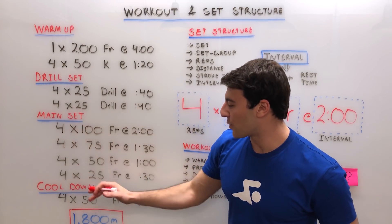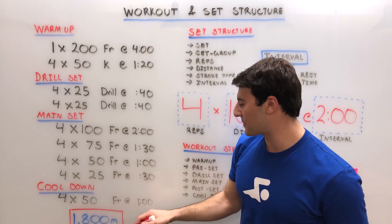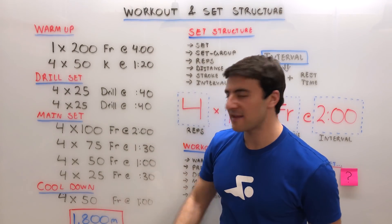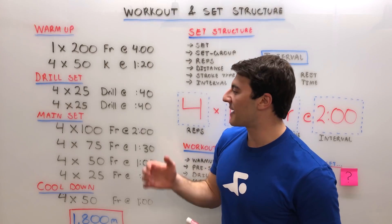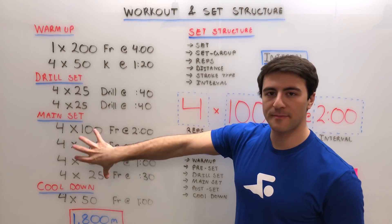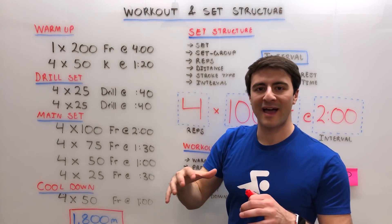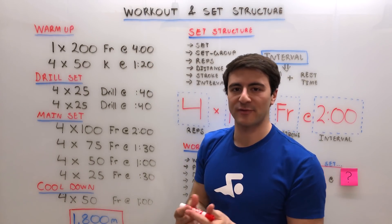Now after the main set, we're doing a cool down: 4x50s freestyle on the minute. This total workout is 1800 meters. It's very easy to see sets like this where either the main set or the drill set, or even the warm-up, will have a repeat around the set group.